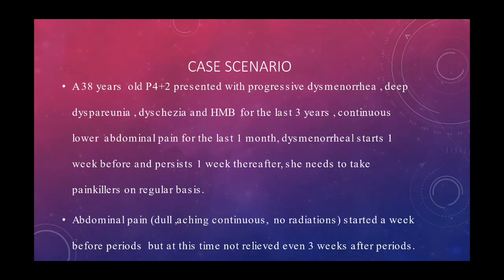Bismillahirrahmanirrahim. We are discussing the case scenario of a patient with endometriosis. A 38-year-old para 4+2 presented with progressive dysmenorrhoea, deep dyspareunia, dyschezia, and heavy menstrual bleeding for the last 3 years. She has continuous lower abdominal pain for the last one month. She was dysmenorrhoeic for the last one week before and persisted one week thereafter, needing to take painkillers on a regular basis.